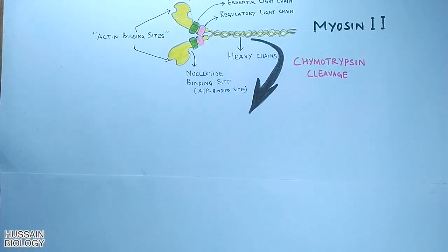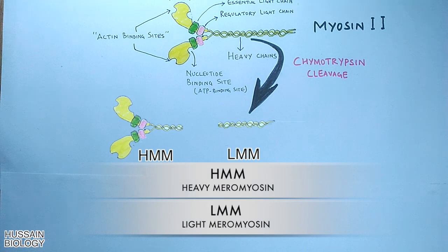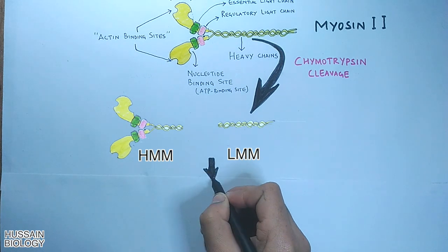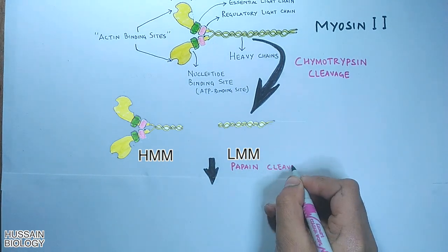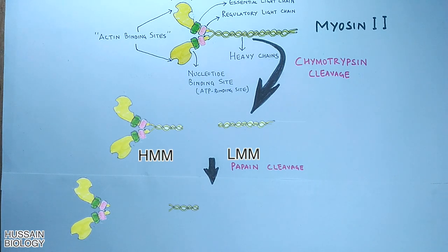In chymotrypsin cleavage, the myosin 2 protein is cleaved into HMM and LMM, as shown in the animation. HMM is the heavy meromyosin and LMM is the light meromyosin. Then in the next step we have papain cleavage. Papain acts on HMM and cleaves it into S1 and S2 domains — S1 is the head part and S2 is the neck part of HMM.